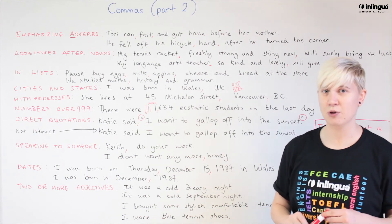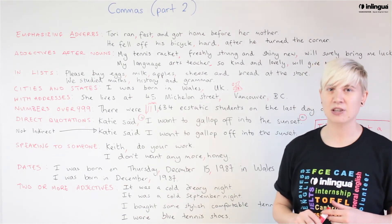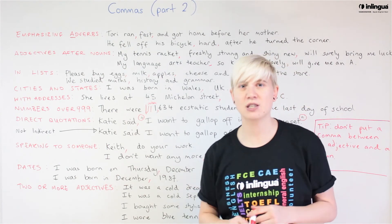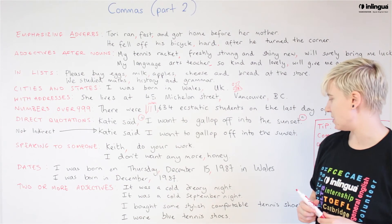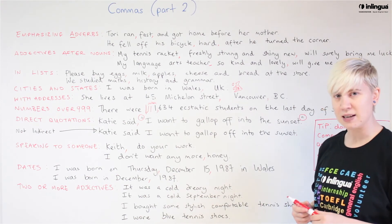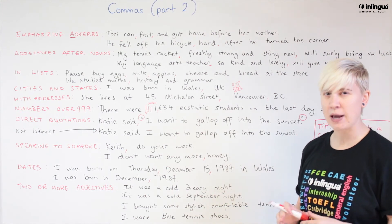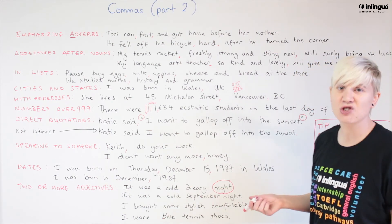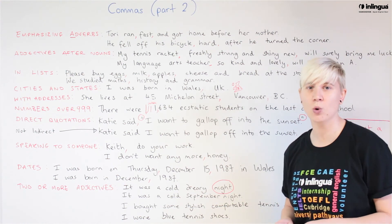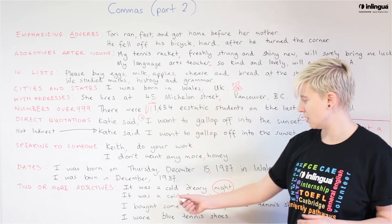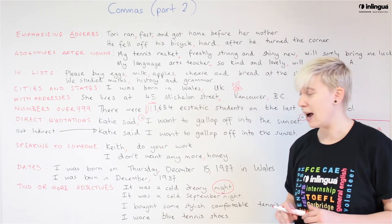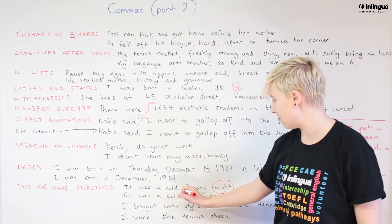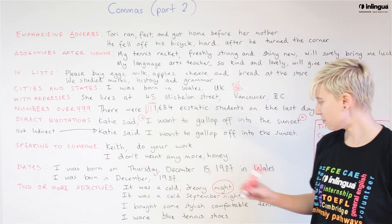Now we're at the bottom of the list and we're going to look at adjectives. Adjectives are words that describe something — for example, 'I am short and blunt,' two adjectives that describe me. First sentence: 'It was a cold, dreary night.' The noun is 'night.' Adjectives describe nouns, letting us know about them. What kind of night? A cold, dreary night. We have two adjectives — cold and dreary — describing this night, and we need to separate them with a comma.